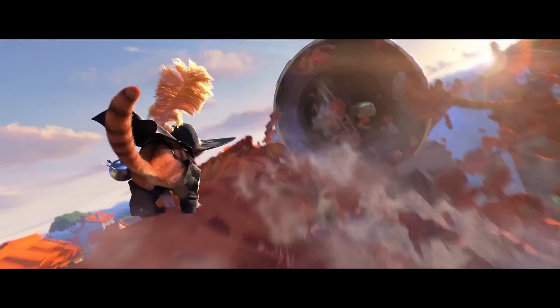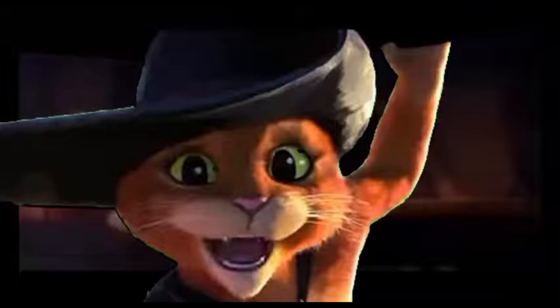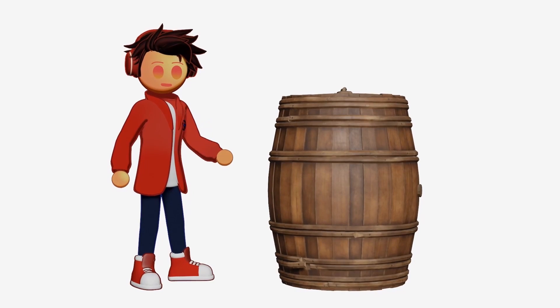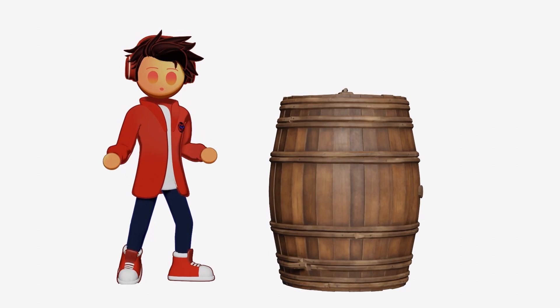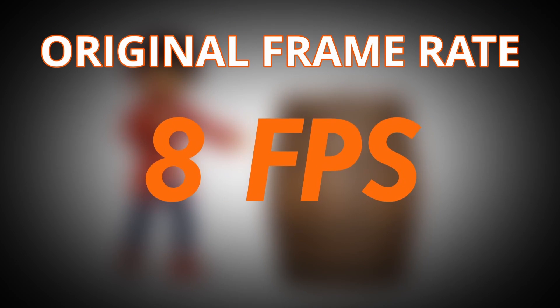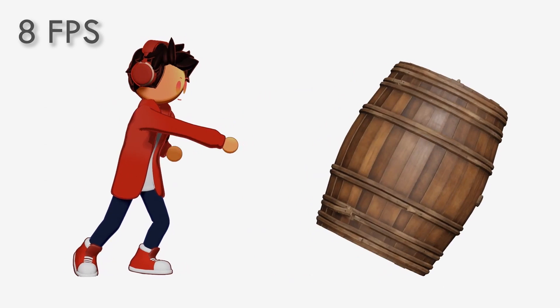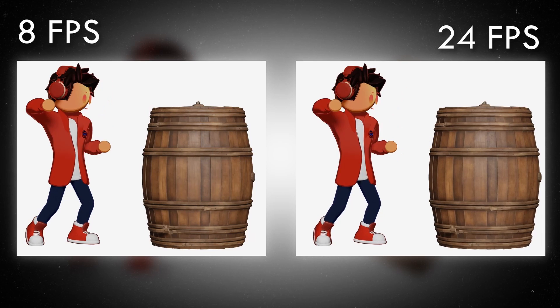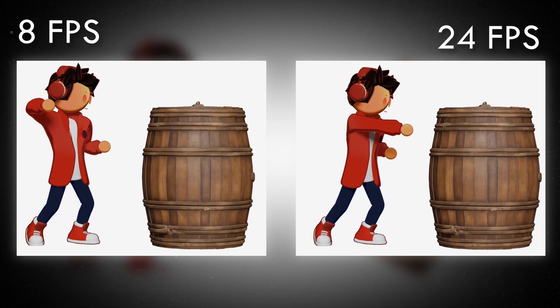If Puss was animated at 24 frames per second, his movement would lose that erraticness. Let me demonstrate. Here on my left, I have a comically large barrel. If I were to punch the barrel at 24 frames per second, it would look something like this. Now what would happen if I did the same thing but was animated on 3s instead? This time, you can actually feel the weight of my punch. Notice how there are fewer in-between frames on the left — this allows my arm to look like it's moving faster.